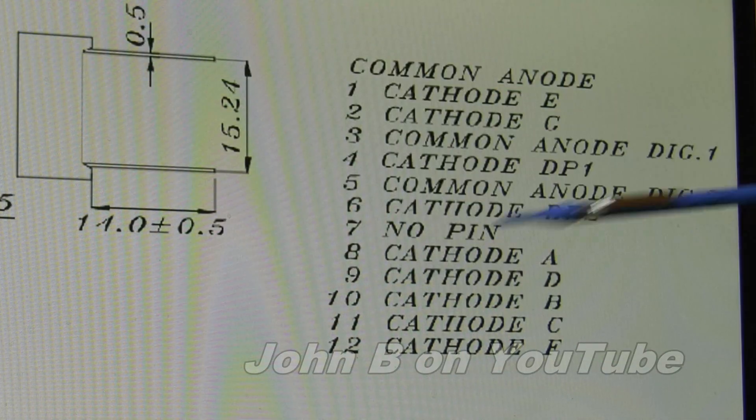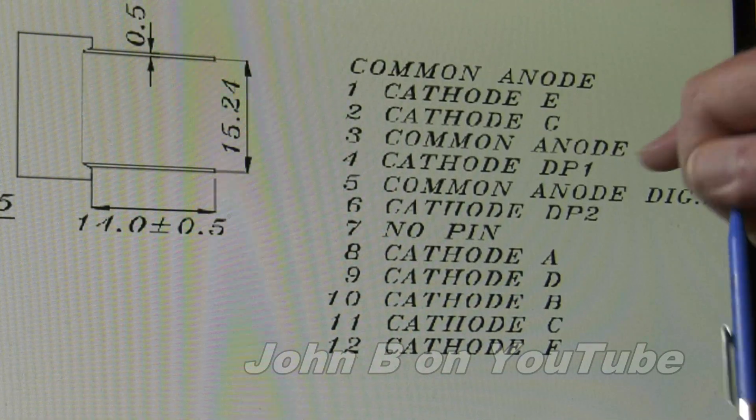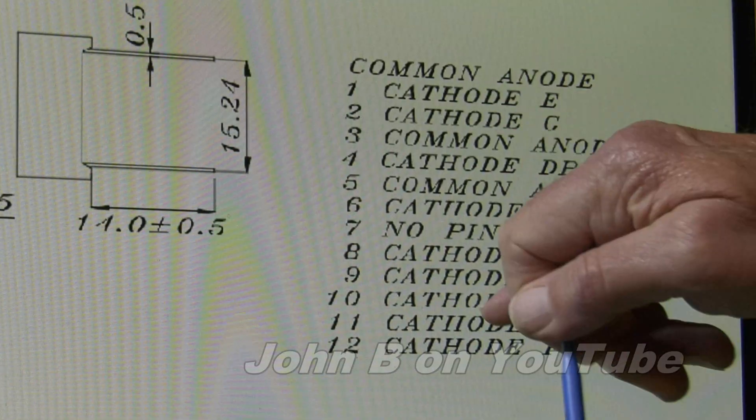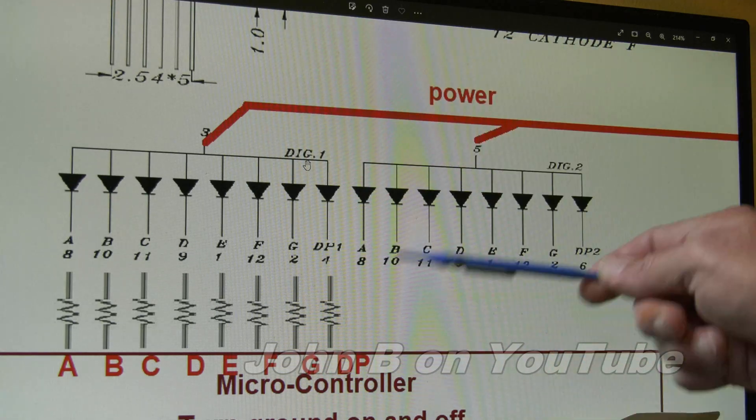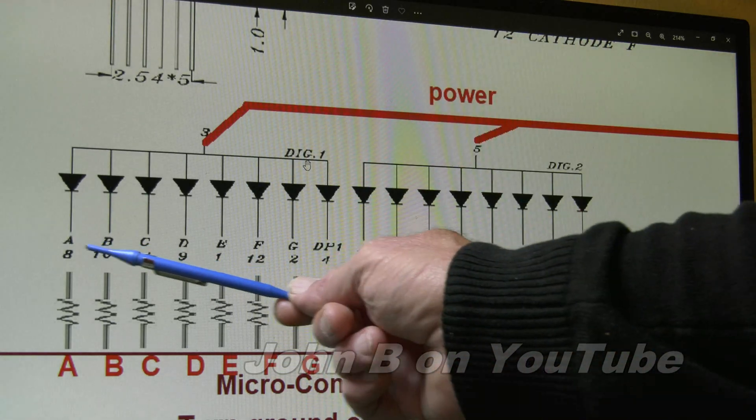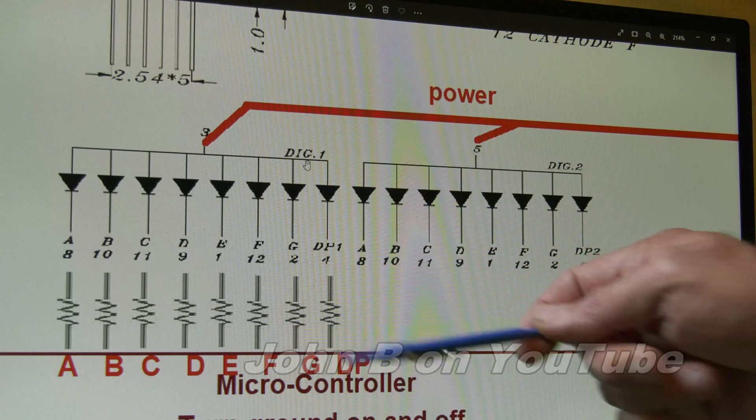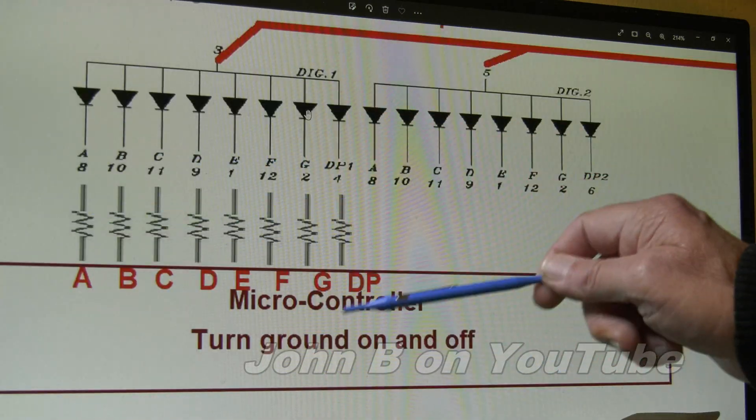How do you get two displays to work then, when the cathodes for each segment are common? That's the effective drawing. So you put power in to both segments, but then you've got common A, B, C, D, E, F, G, decimal point. So using some resistors...